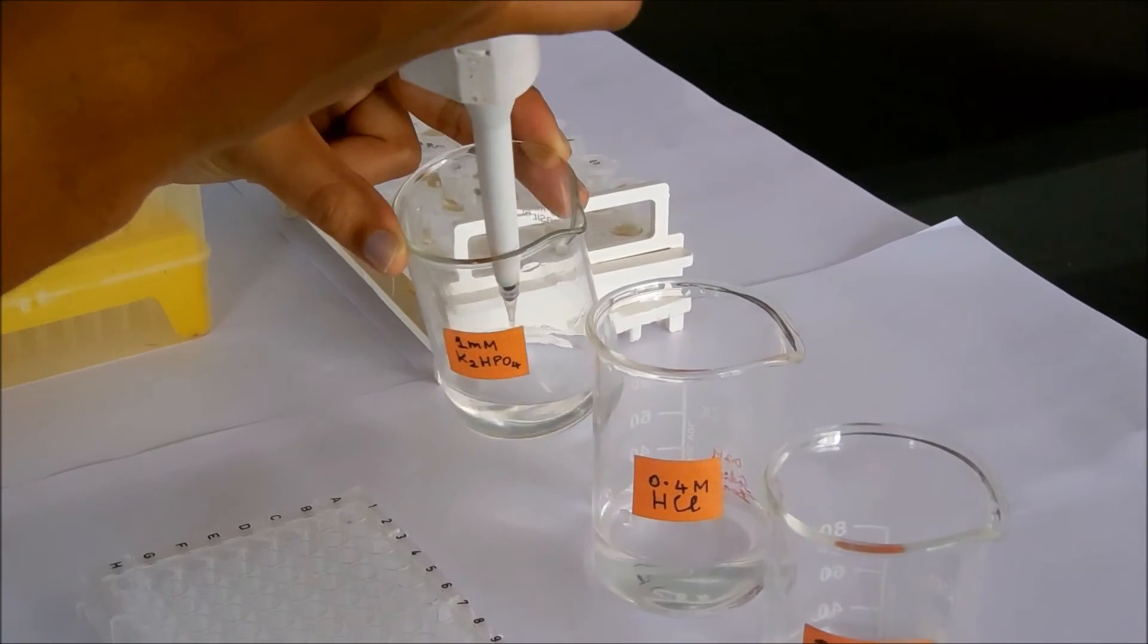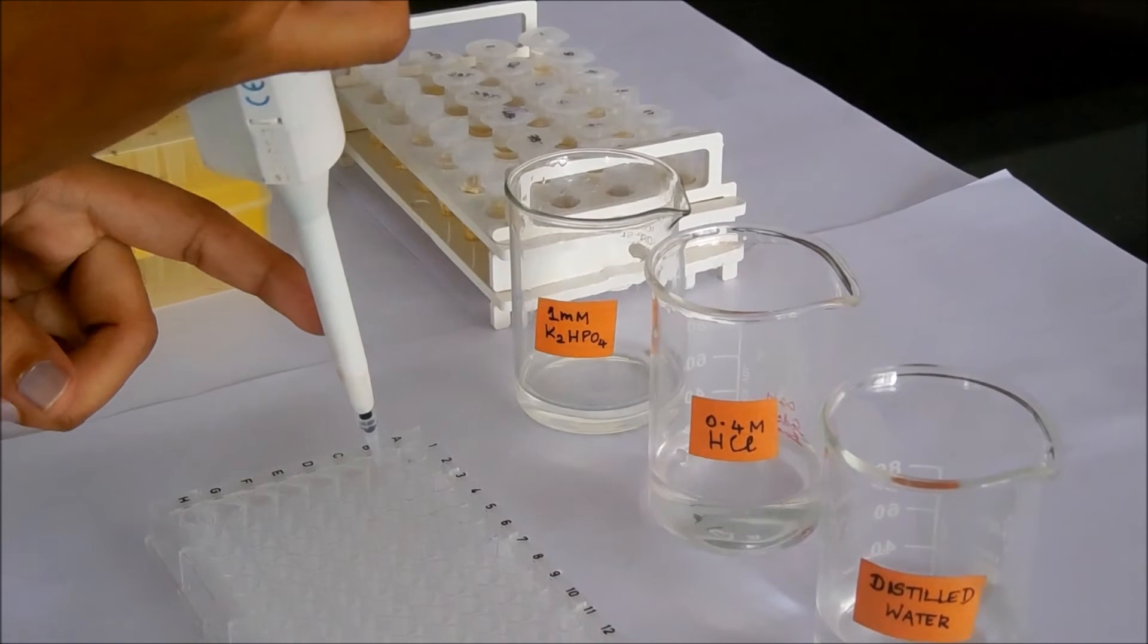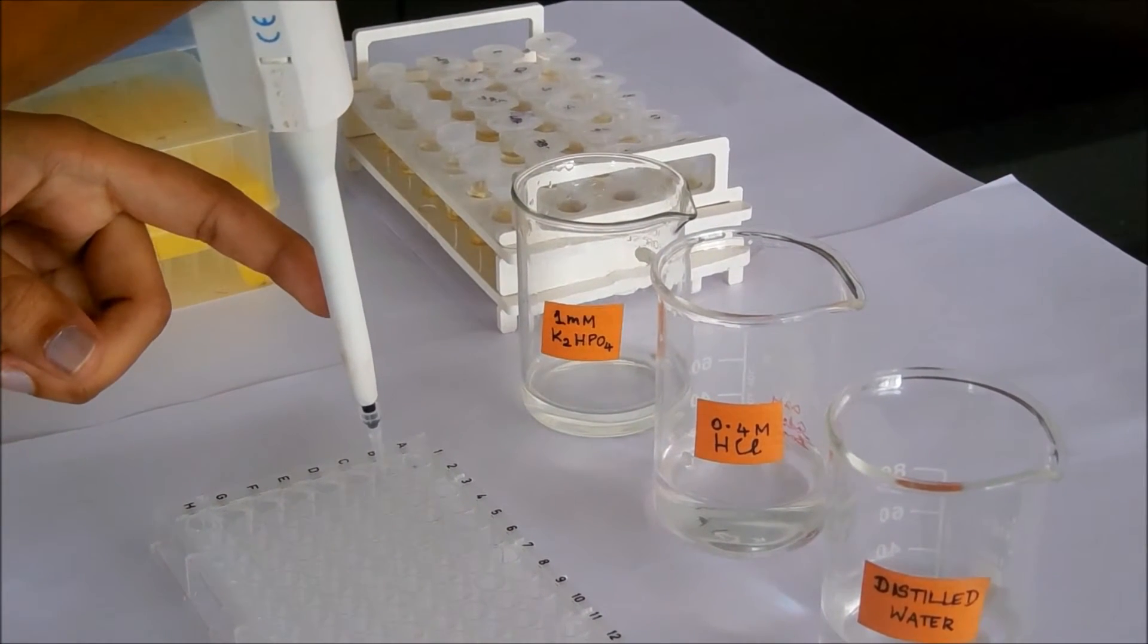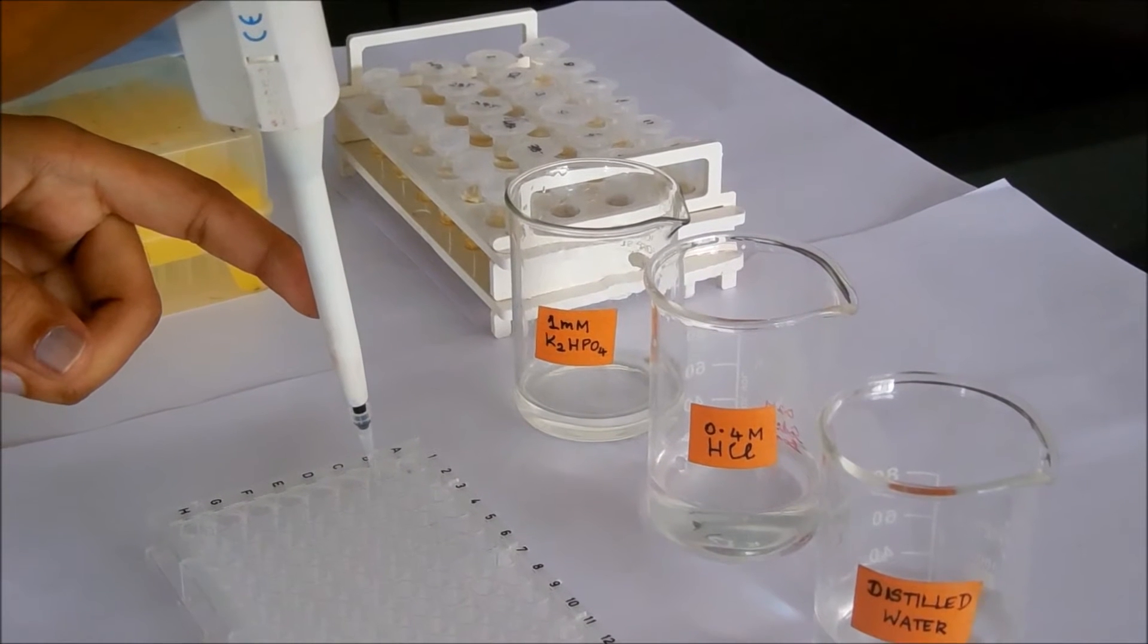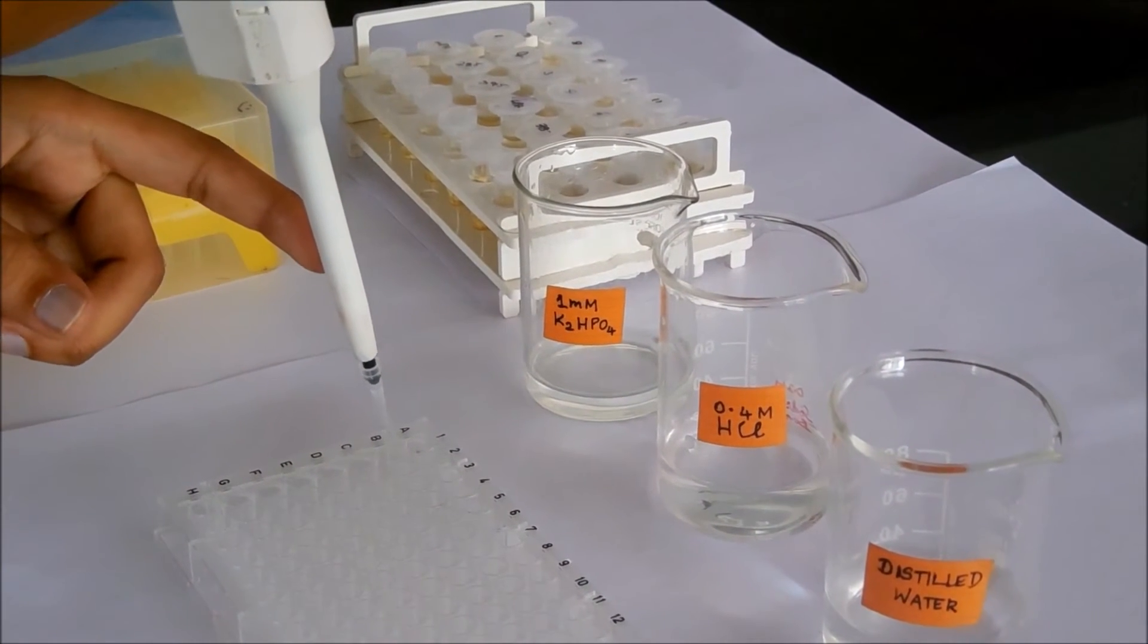For standard preparation, take dipotassium hydrogen phosphate at volumes of 0 µL, 5 µL, 15 µL, 30 µL, and 45 µL.